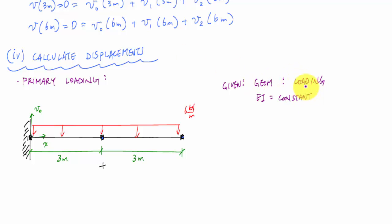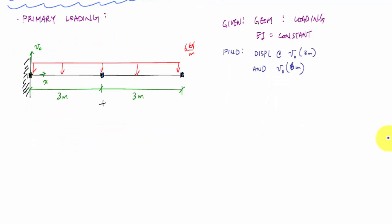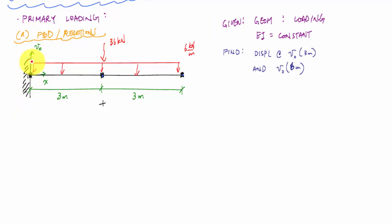With constant flexural rigidity, I want to find the displacements at v₀ of three meters and v₀ at six meters using the double integration method. Here's my free body diagram. I'll solve for the reactions: six kilonewtons per meter times six meters gives a resultant of 36 kilonewtons. Summing forces in the vertical direction gives a 36 kilonewton reaction going upward.